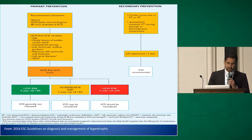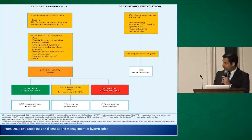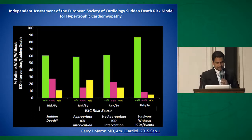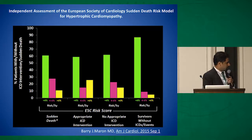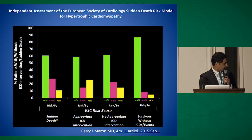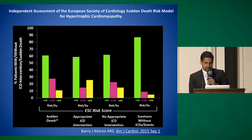Going back to the European risk calculator, which is now included in their guidelines: a five-year score less than 4% means ICD not recommended, and greater than 6% means ICD recommended. How does this risk calculator work in an American cohort? This was looked at by Dr. Marin's group — turns out it doesn't work that well either. The green bars here are the lowest-risk group with a calculated risk less than 4%, yet they have the highest number of events in the American cohort for both sudden death and appropriate ICD shocks.